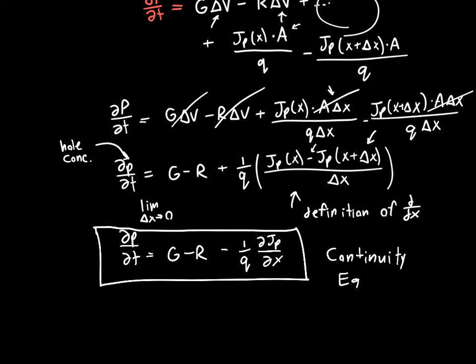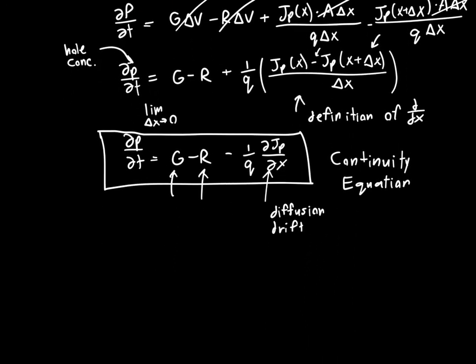It's not quite in a usable form just yet, which is what I'll go over in the next video. But conceptually this is the complete continuity equation — all the sources that can change carrier concentration are accounted for: generation, recombination, and both kinds of current. In the next video we're going to expand the Jp term into diffusion and drift currents, and expand the g minus r term, putting everything in terms of delta p instead of p, where delta p is the change from equilibrium.